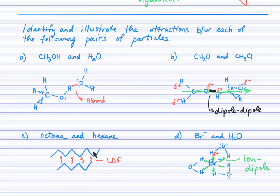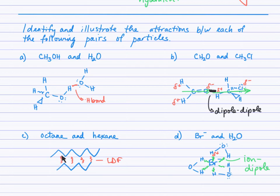For part C, octane and hexane: drawing the complete structural formula requires showing the tetrahedral VSEPR shape, which is what line diagrams show nicely at the 109° angle without filling in all wedges and receding lines — so keep drawing hydrocarbons with line structures. Both molecules are non-polar, so there are only London forces between them. For the bromide ion and water: that negative bromide ion experiences ion-dipole attractions from the partially positive hydrogen end of the water molecules, as labeled in the diagram.